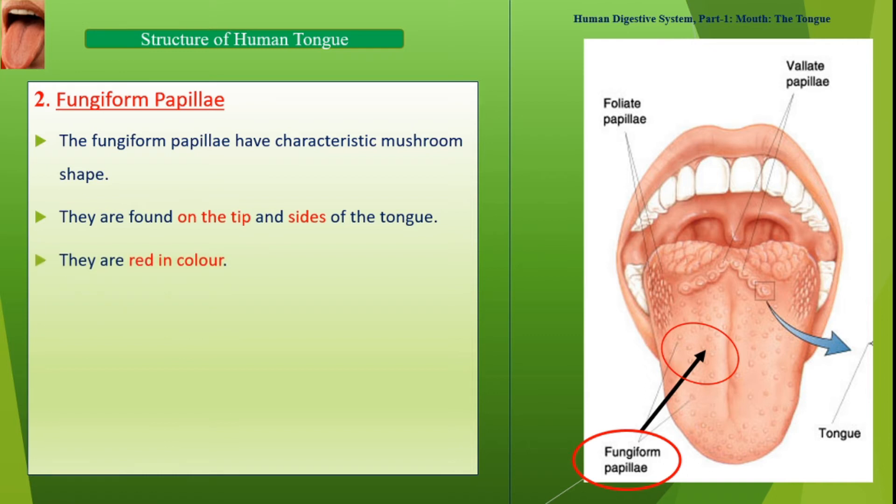Fungiform papillae have a characteristic mushroom shape. They are found on the tip and the sides of the tongue.